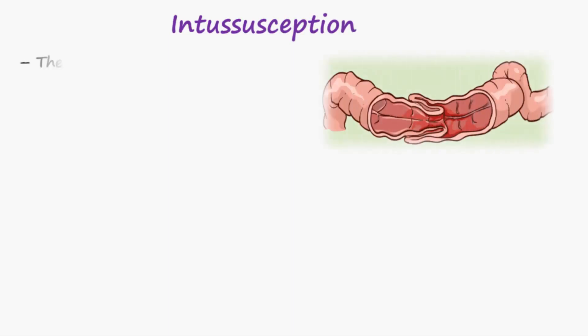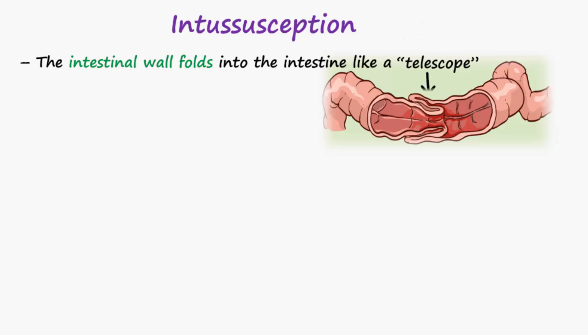Intussusception occurs when the intestinal wall folds in such a way that the intestine telescopes, and a section of the bowel folds into the section immediately ahead of it. It consists of an intussusceptum or donor loop and an intussuscipiens or receiving loop.